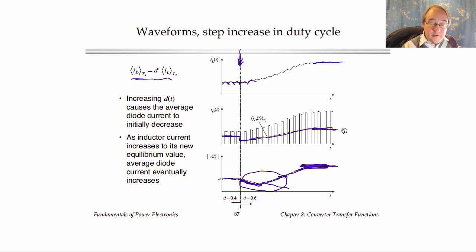So boost converters, buck-boost converters, and other converters that have right-half plane zeros are notoriously difficult to control. And in fact, before these average models were developed, people didn't understand why, but they did know that boost converters and buck-boost converters tended to oscillate, and they were difficult to control. And it was one of the early victories of averaged converter modeling to be able to predict the right-half plane zero and show why these things were happening.